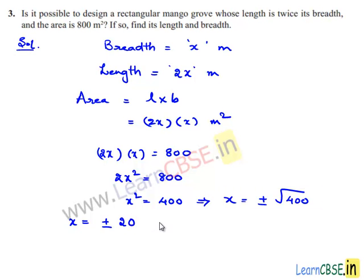Since x is a dimension, x equals minus 20 can be ignored. So we get the value of x as only plus 20.